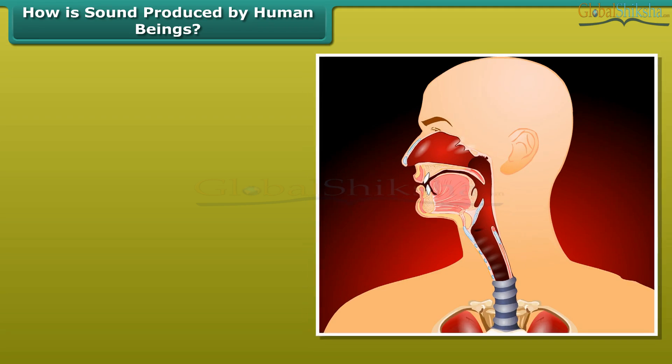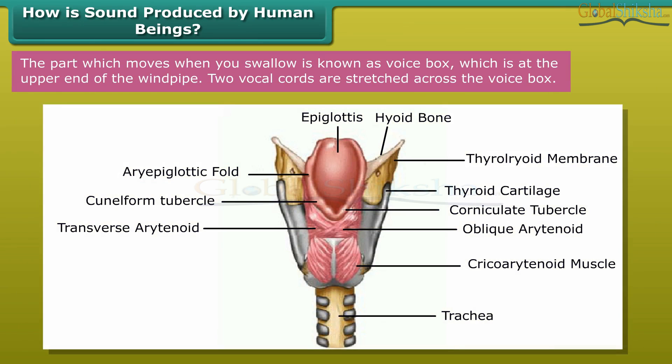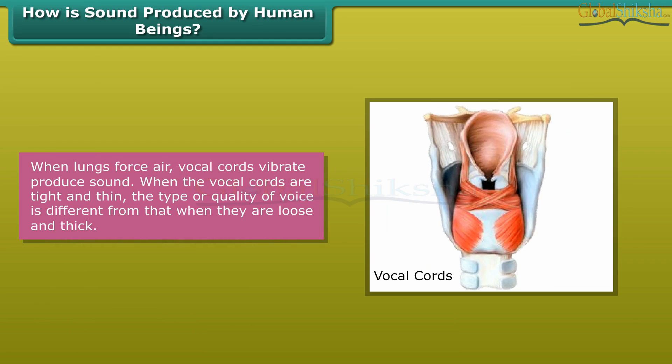How is sound produced by human beings? Voice box in human. Sound is produced by the voice box or the larynx in humans. The part which moves when you swallow is known as voice box, which is at the upper end of the windpipe. Two vocal cords are stretched across the voice box. When lungs force air, vocal cords vibrate, producing sound. When the vocal cords are tight and thin, the type or quality of voice is different from that when they are loose and thick.